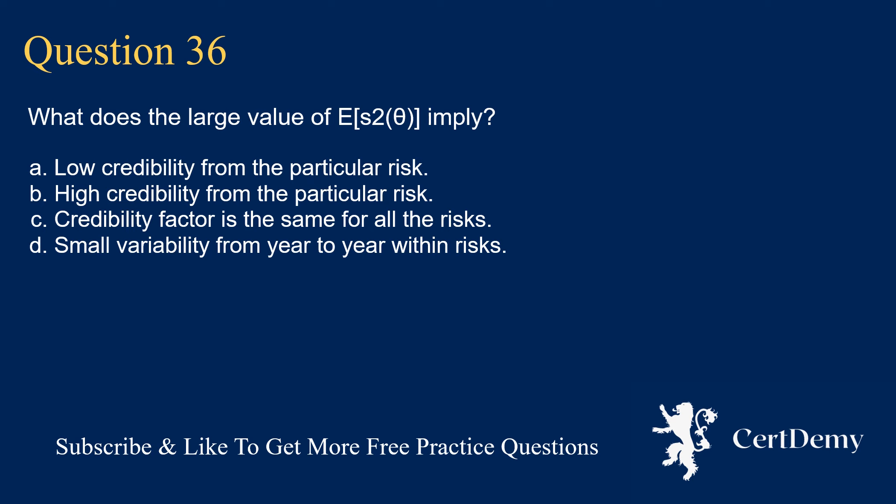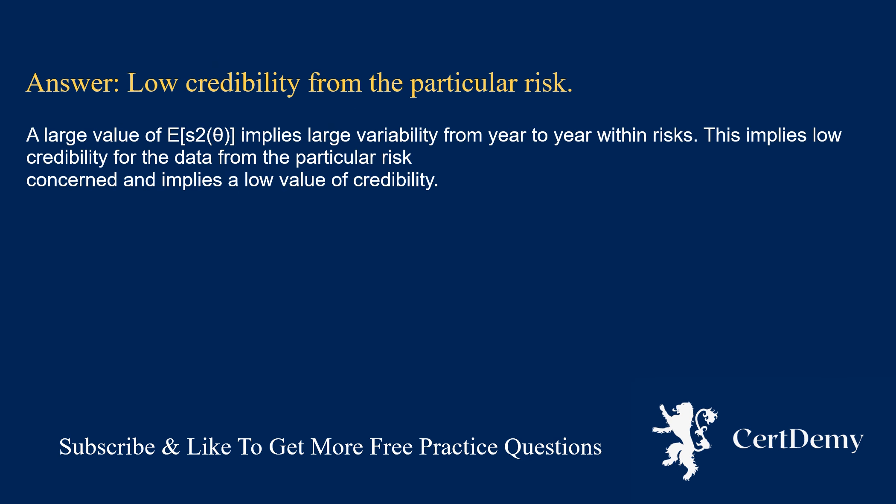Question 36. What does a large value of E(S²(Theta)) imply? Options: low credibility from the particular risk; high credibility from the particular risk; credibility factor is the same for all risks; small variability from year to year within risks. The answer is: low credibility from the particular risk. A large value of E(S²(Theta)) implies large variability from year to year within risks, which in turn implies low credibility for the data from the particular risk and a low value of the credibility factor.